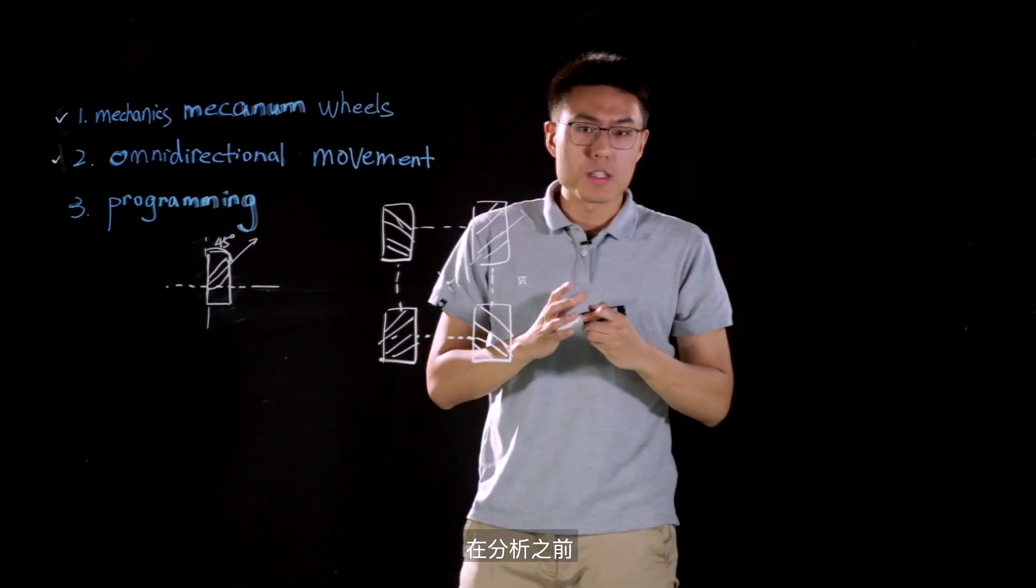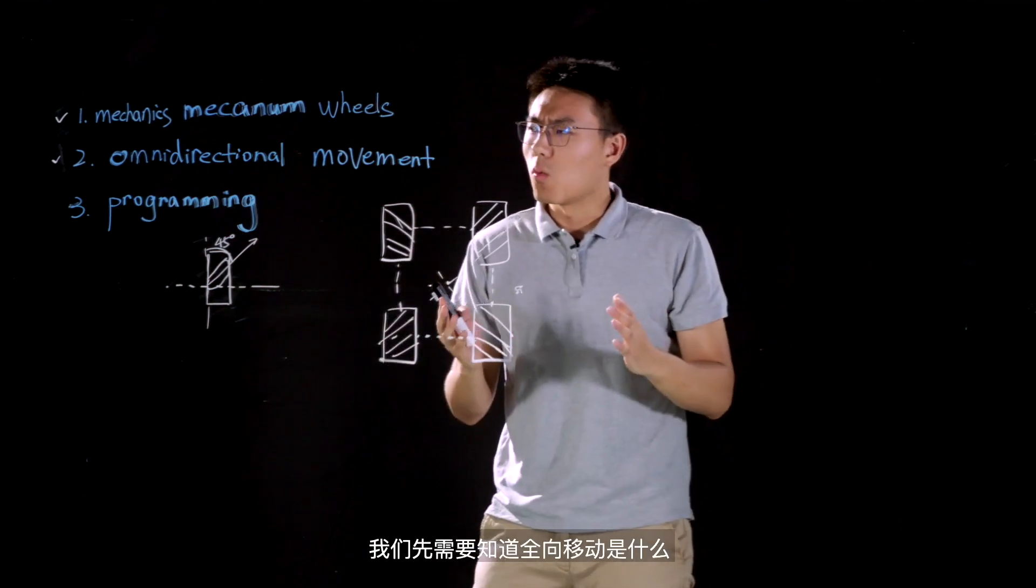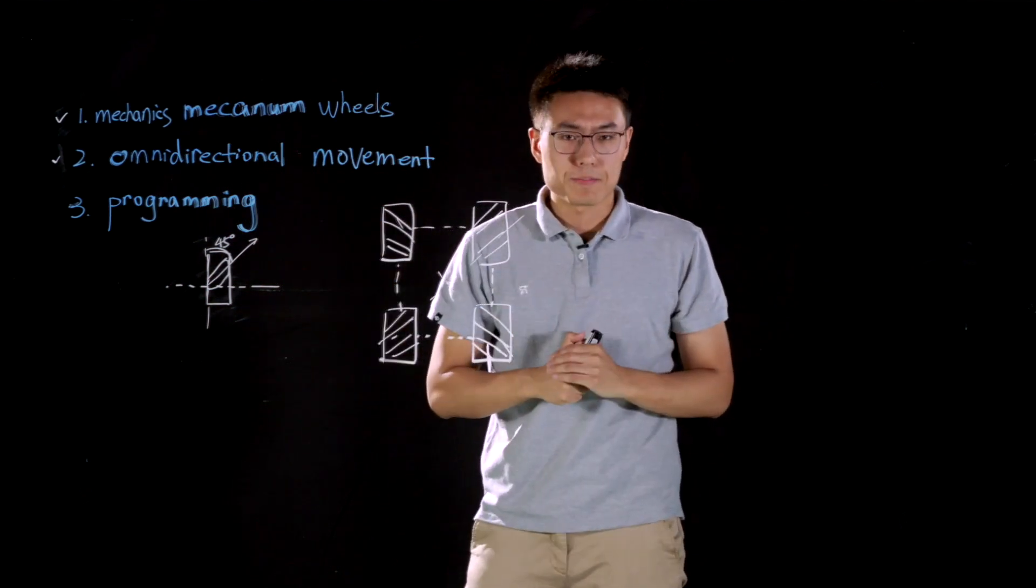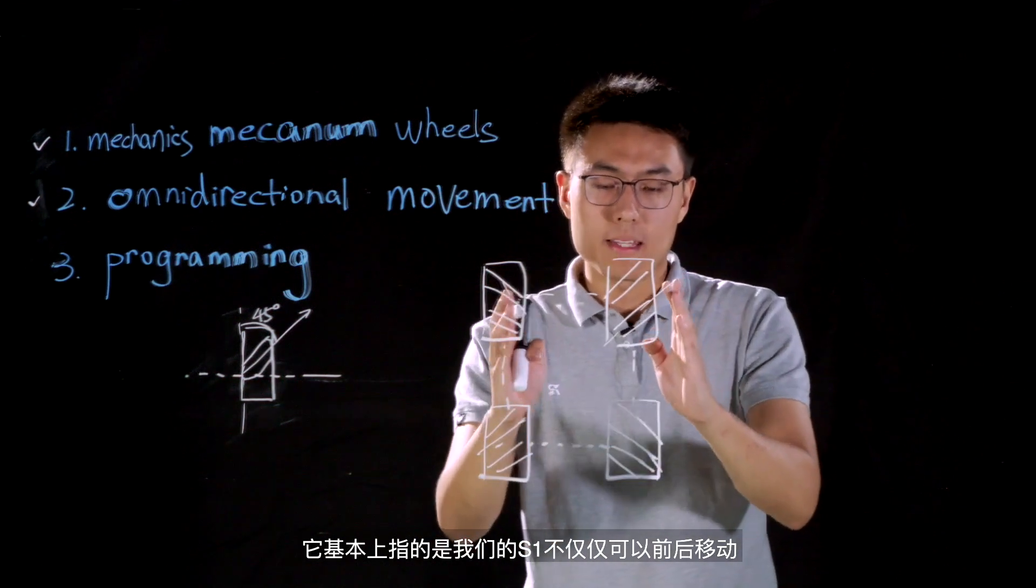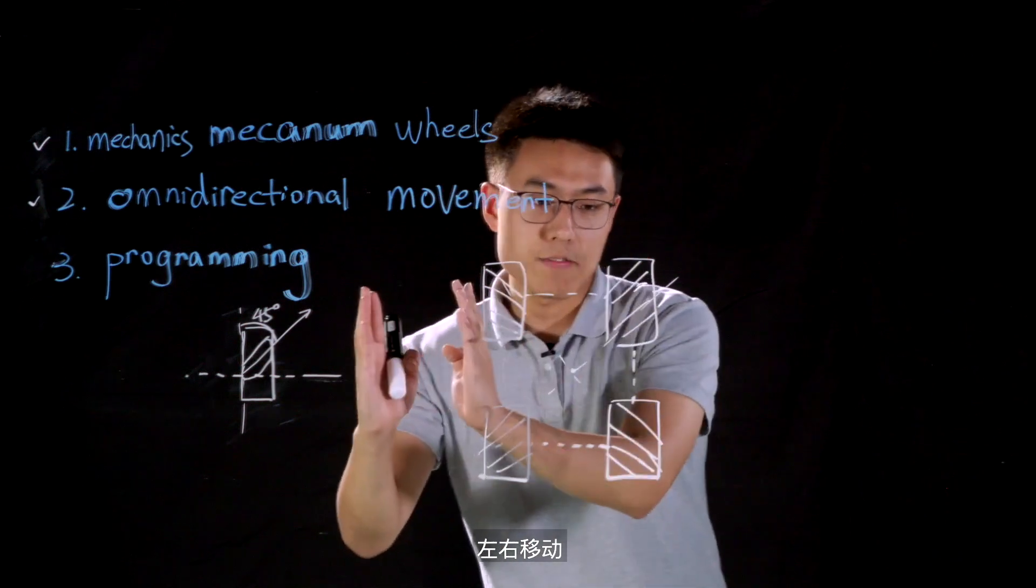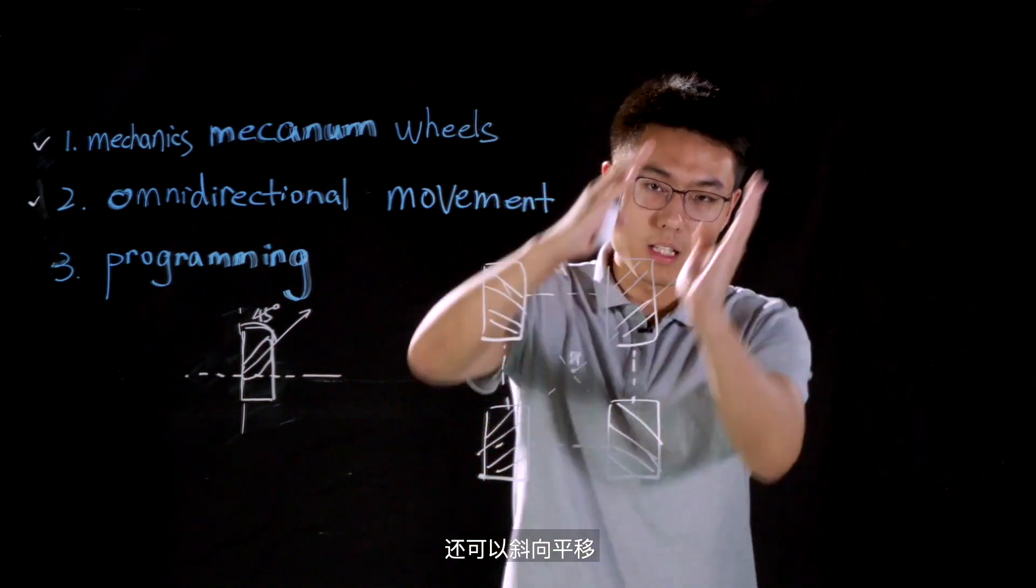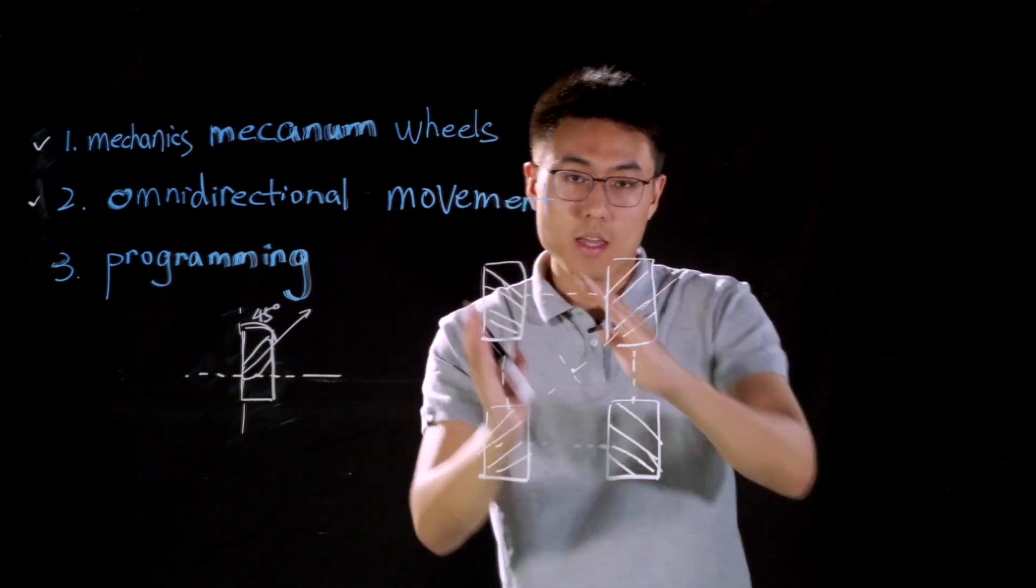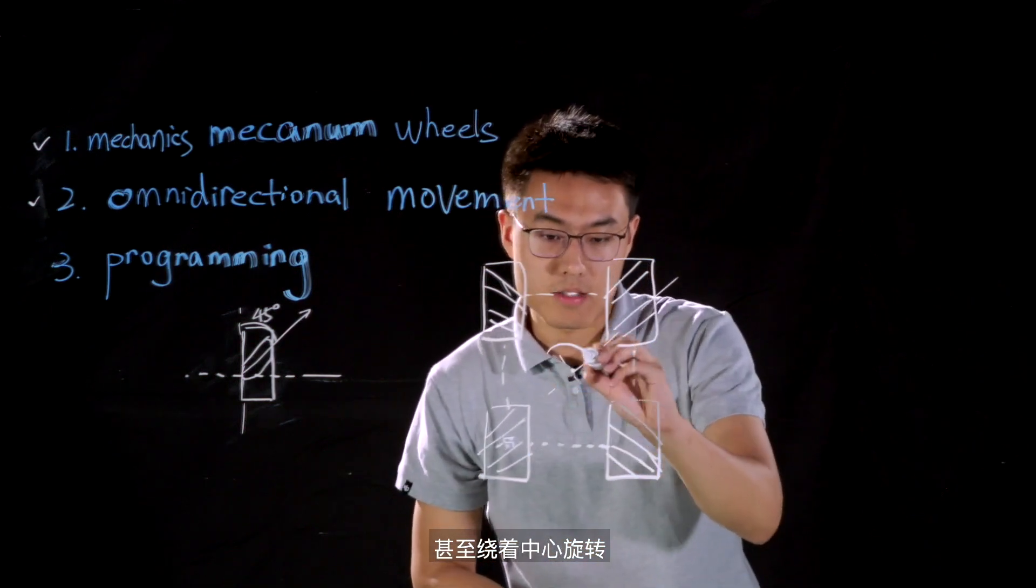So, before we're doing some analysis, we need to know what the omnidirectional movement is. It basically means our S1 can not only move forward, backward, to right, or to left, but also move obliquely, and even rotate around its geometric center.